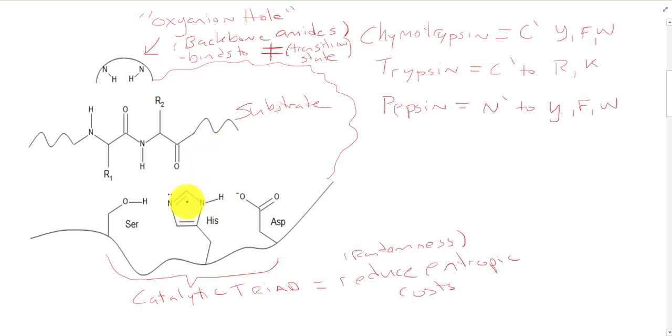And so our first step here is for our histidine to pull off the serine hydrogen. That's going to give the serine a negative charge, a lone pair. And that's going to attack our carbonyl. The carbonyl is then going to get a negative charge.